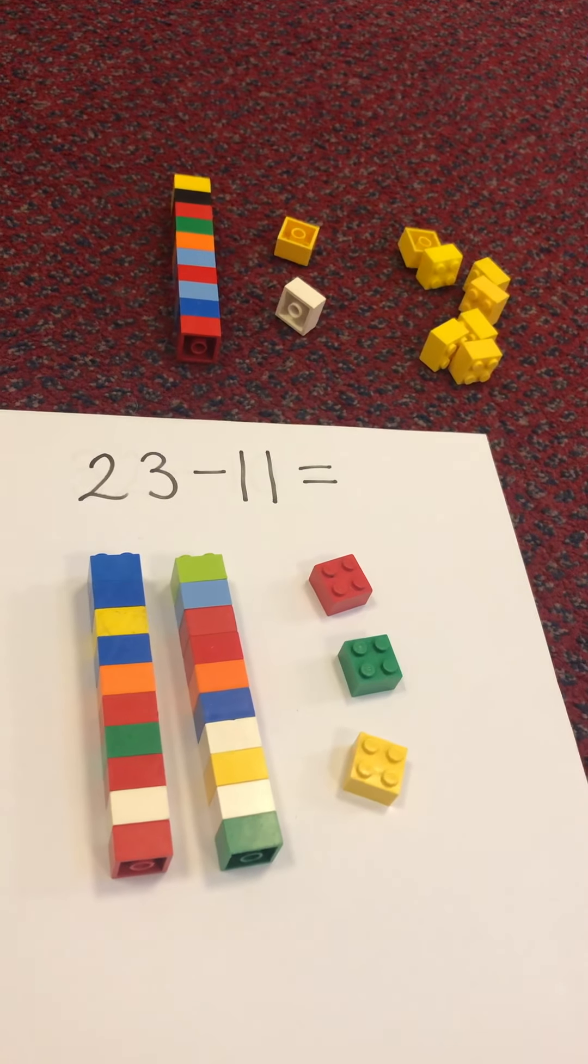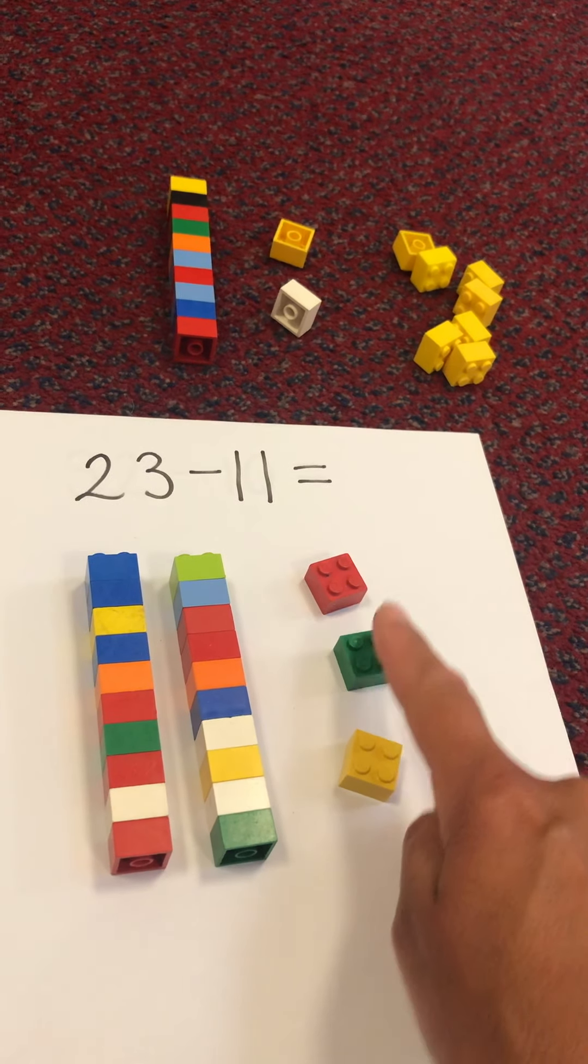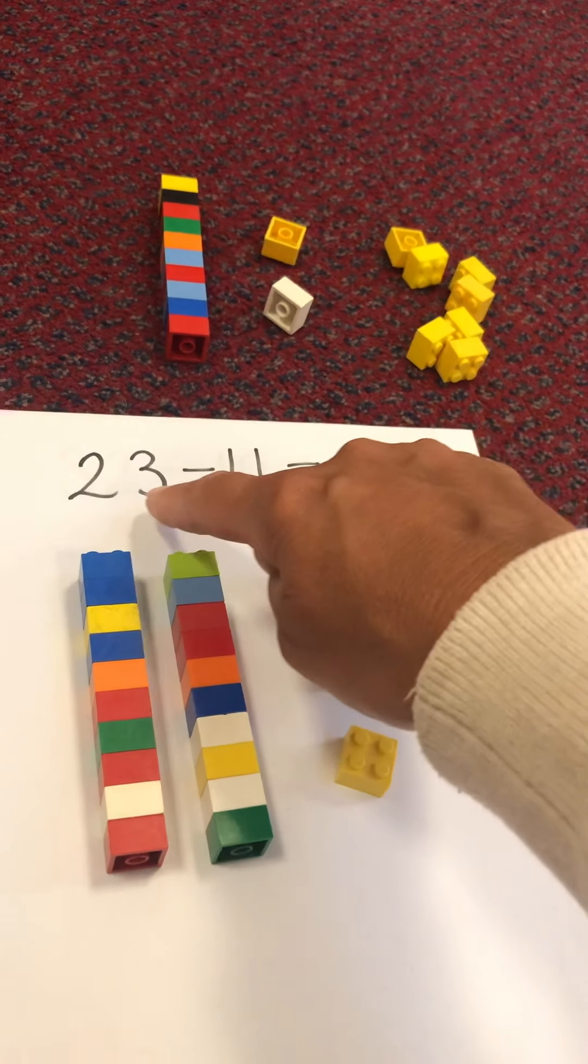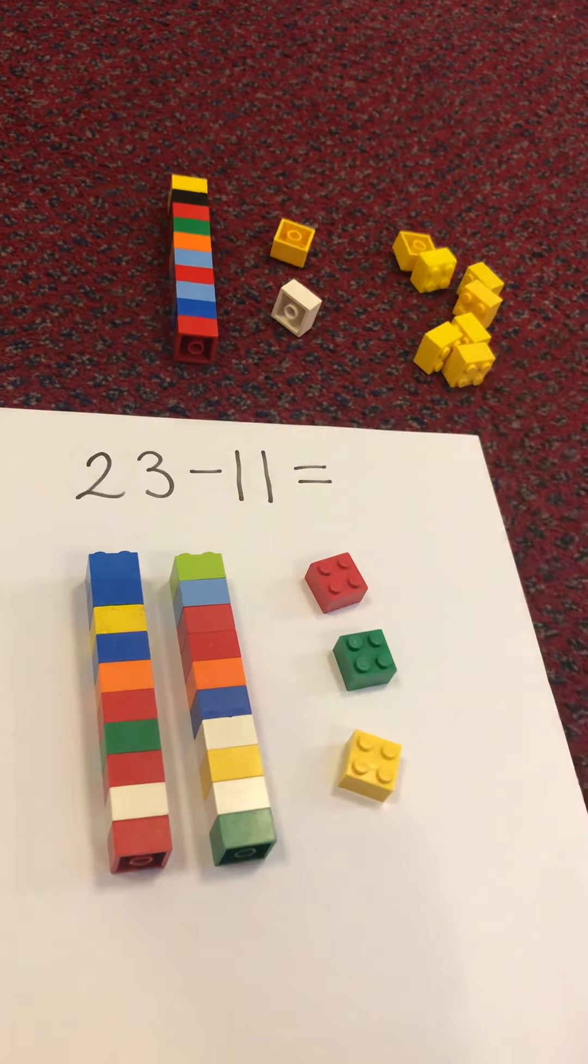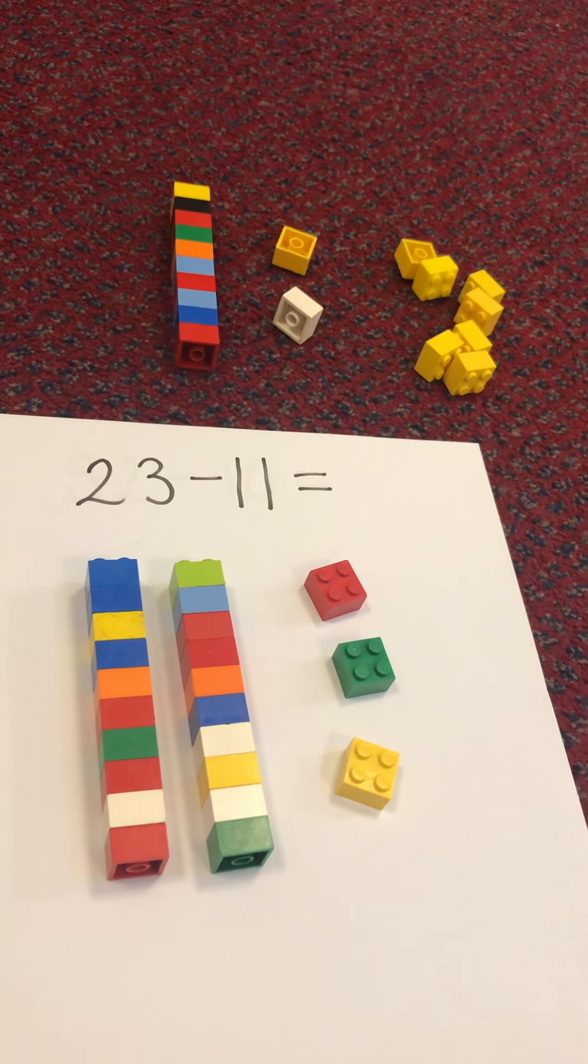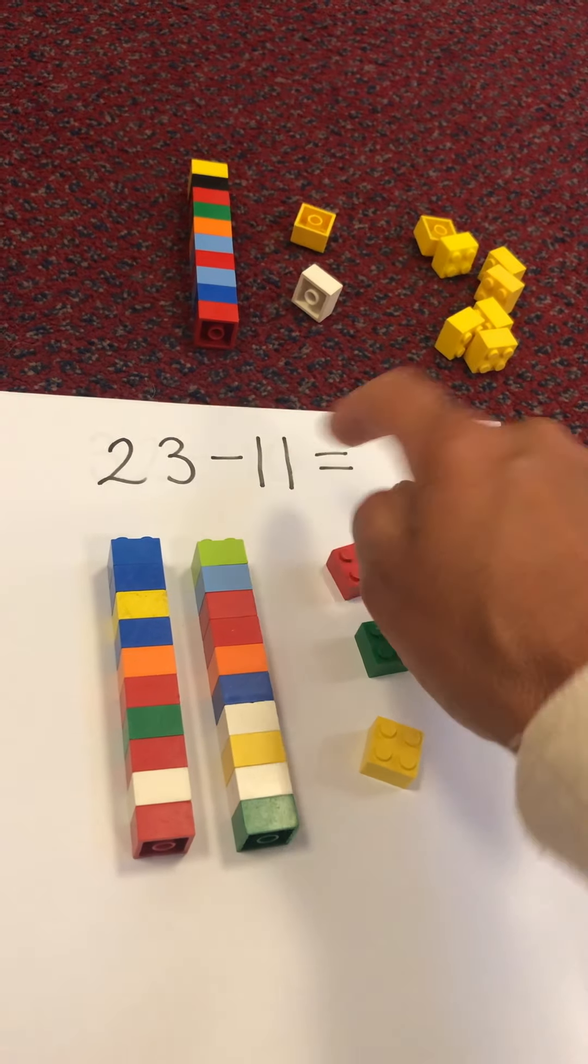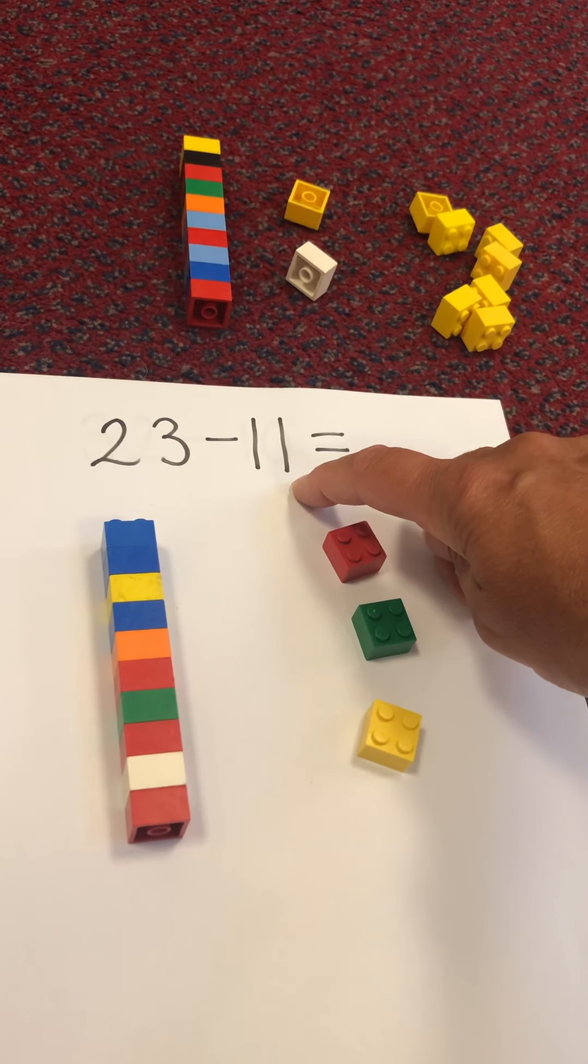Let's check, we've got 23. Ten, twenty, twenty-one, twenty-two, twenty-three. Now, I need to take away, subtract, 11. How am I going to do that? Well done. I need to take away one lot of ten. And I need to take away one one.